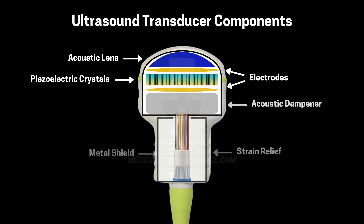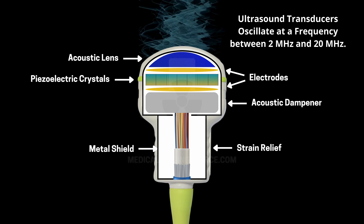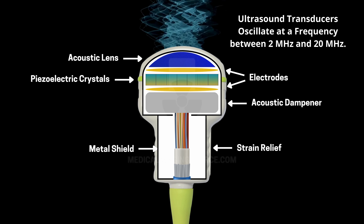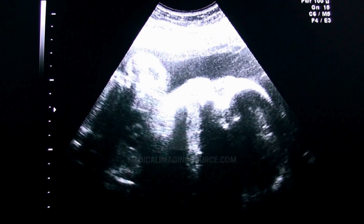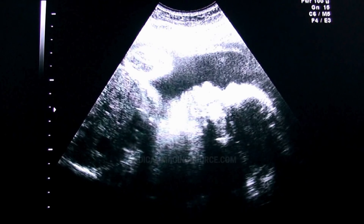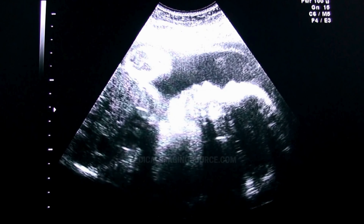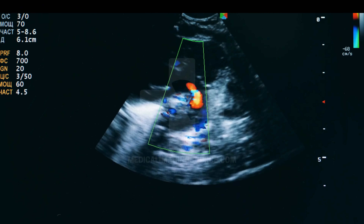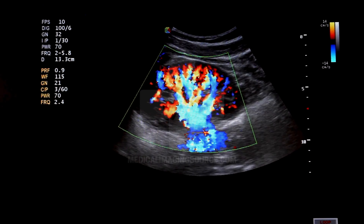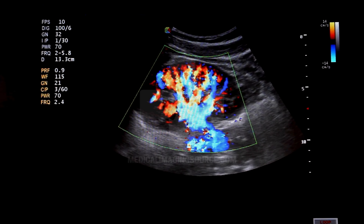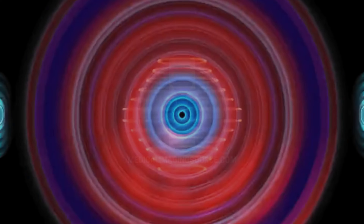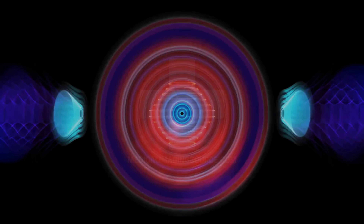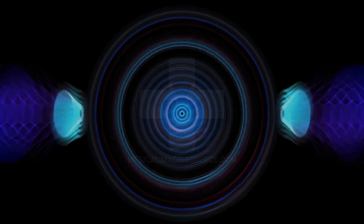When an electric current is applied to these crystals, they vibrate at a specific frequency, producing ultrasound waves that travel into the body. These ultrasound waves propagate through the skin and underlying tissues. As they encounter boundaries between different tissues or organs, some of the waves are reflected back towards the transducer.